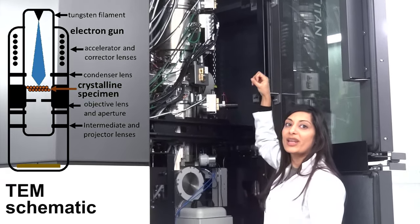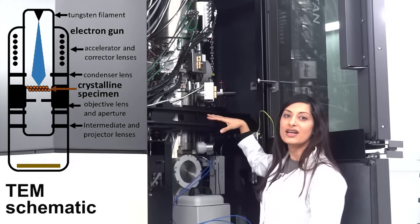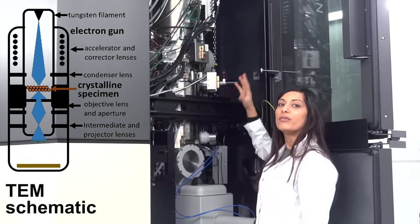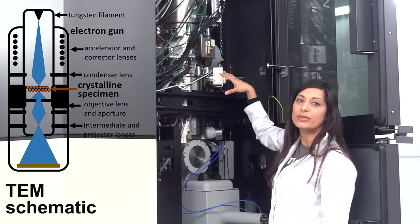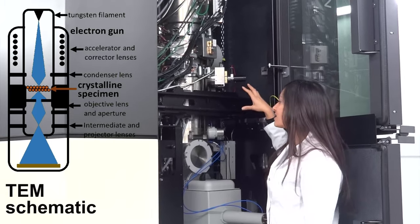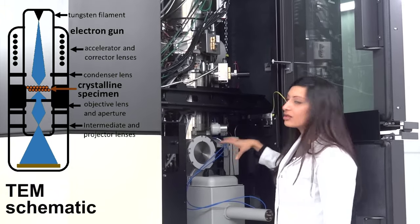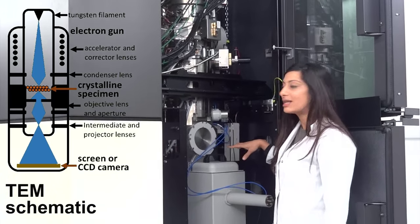The electrons go through the sample and are collected on the other side, and some of them are moved around by the presence of the sample. This creates contrast in the image. This is all collected on a detector here which is a CCD camera.